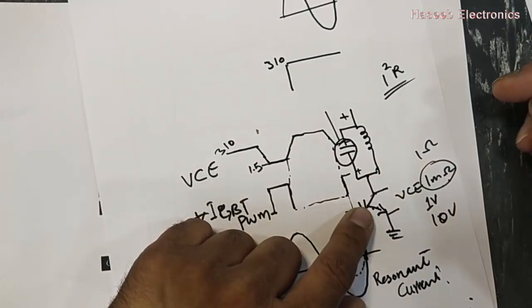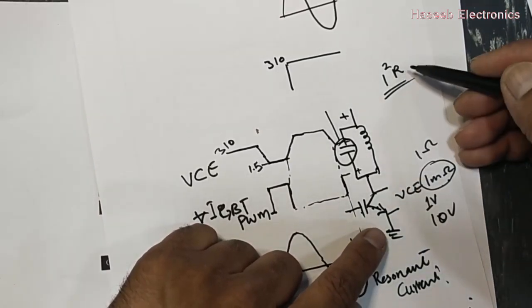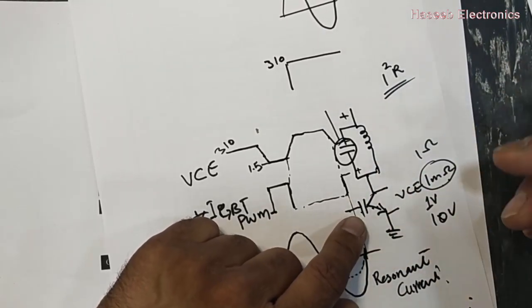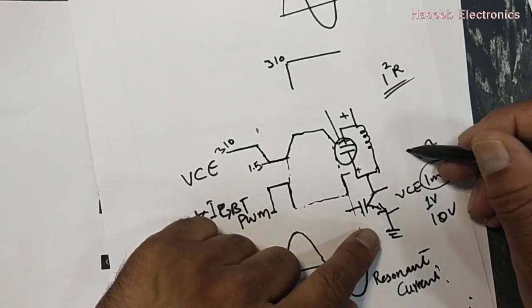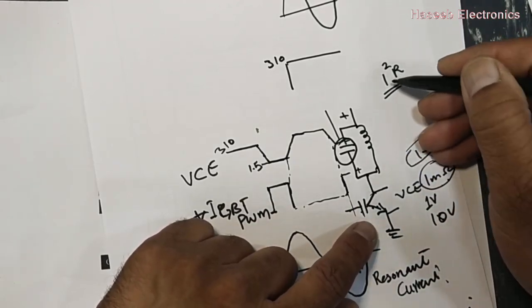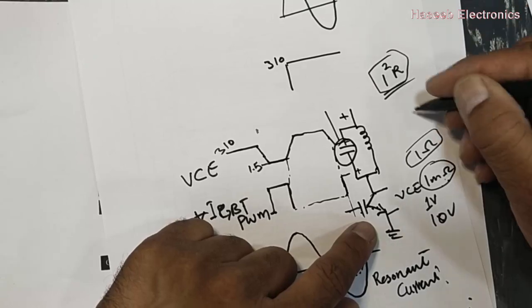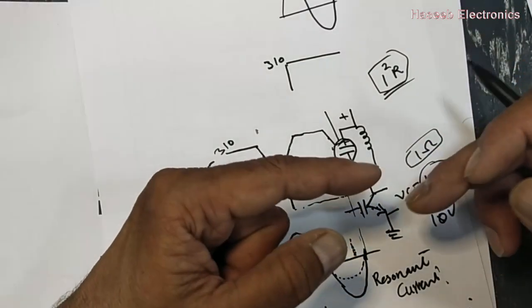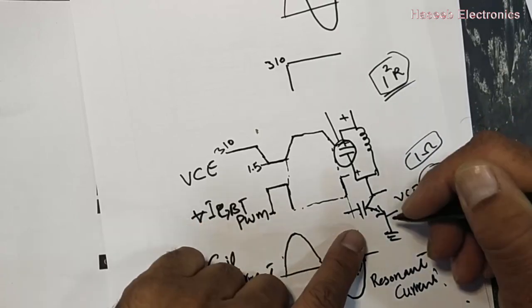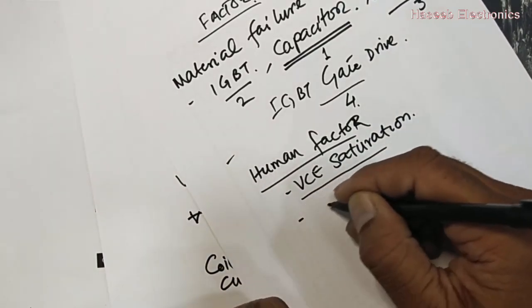When the IGBT is on and saturated, it allows maximum current to flow. If its internal resistance is low, it will dissipate low power internally and the junction temperature will not increase too much. But if we select a component with one ohm resistance, using the formula I²R, the power dissipation is far greater. This continuous repetitive power dissipation causes the junction temperature to increase, so we must select a component with a perfectly matching VCE saturation value.